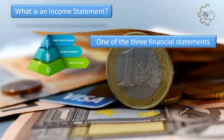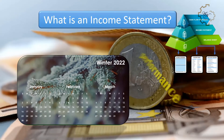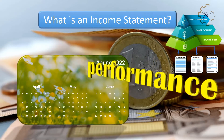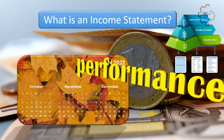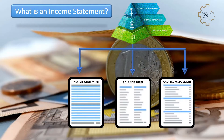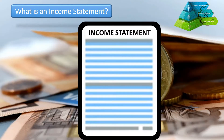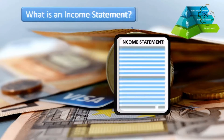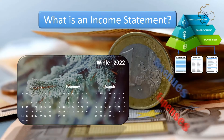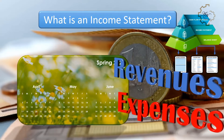An income statement is one of the three important financial statements used for reporting a company's financial performance over a specific accounting period, with the other two key statements being the balance sheet and the statement of cash flows. Also known as the profit and loss statement or the statement of revenue and expense, the income statement primarily focuses on the company's revenues and expenses during a particular period.